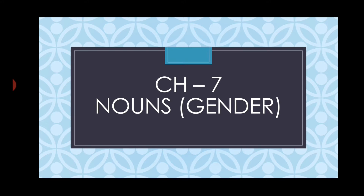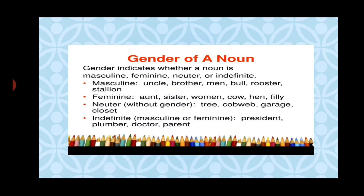In this chapter we are going to learn about the gender of particular nouns. Nouns, as we know, are the name of a person, a place, animal, or a thing. Gender indicates whether a noun is masculine, feminine, neuter, or indefinite. Masculine gender refers to uncle, brother, man, bull, rooster — it denotes a male.